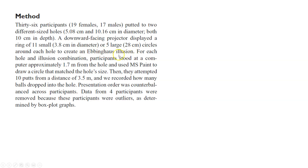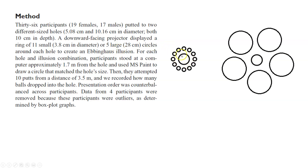The Ebbinghaus illusion works like this: if you've got a hole and light circles projected around it, small surrounding circles make the center look bigger, while large surrounding circles make the same center look smaller — even though the actual hole is the same size. For each hole and illusion combination, participants stood at a computer approximately 1.7 meters from the hole and used Microsoft Paint to draw a circle matching the hole's size. This gave researchers an objective measure of how big the students perceived the holes to be.